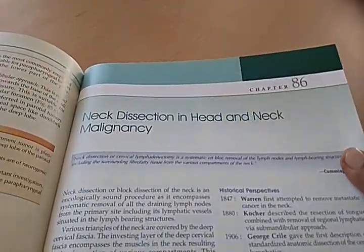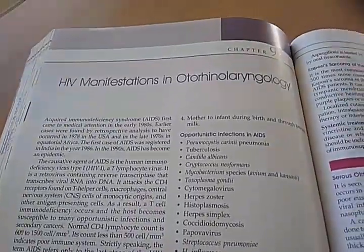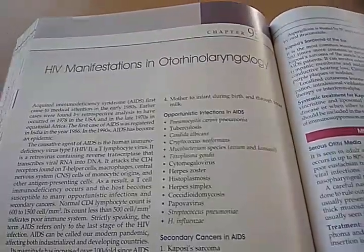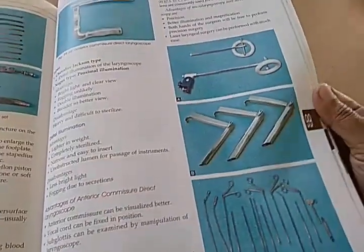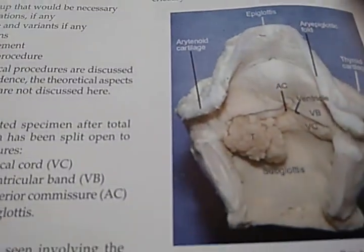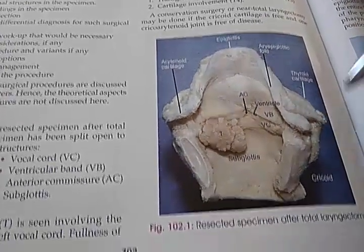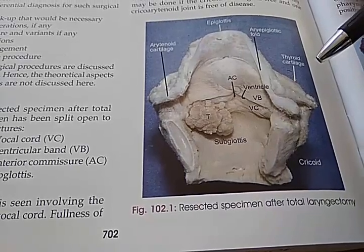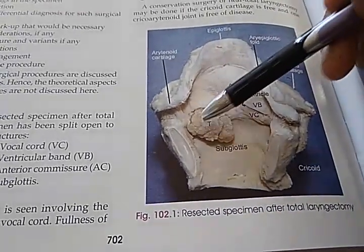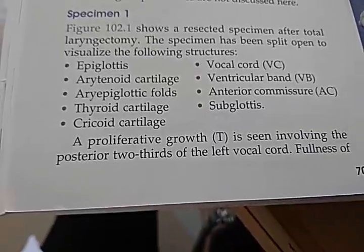Neck dissection in head and neck malignancy. Advanced topics — methotrexate as a chemotherapeutic agent. Like many books, this one also has a chapter on HIV manifestations in ENT. And here with the instruments — operative specimens of ENT: epiglottis, arytenoid cartilage, aryepiglottic fold, thyroid cartilage — the resected specimen after total laryngectomy. T refers to the proliferative growth.